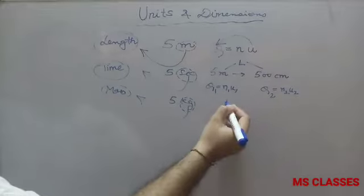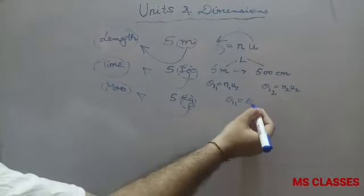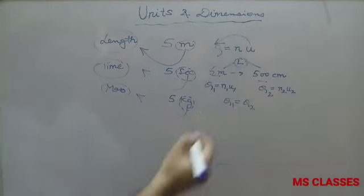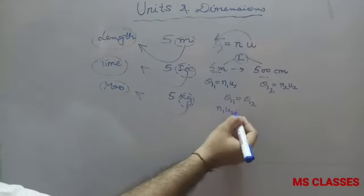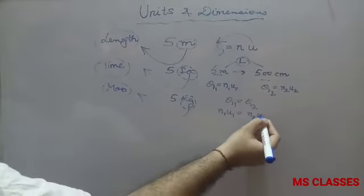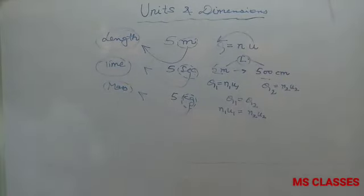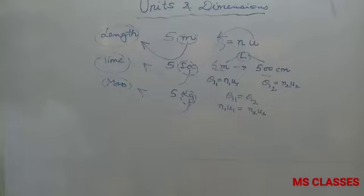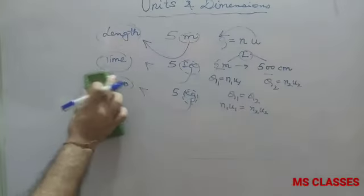You can see that Q₁ equals Q₂ because in both cases the physical quantity remains the same. Therefore we can say that N₁U₁ = N₂U₂. This is the basic formula to convert one system into another system.